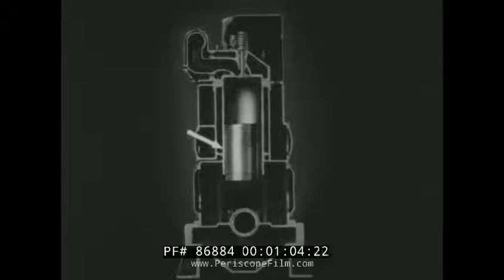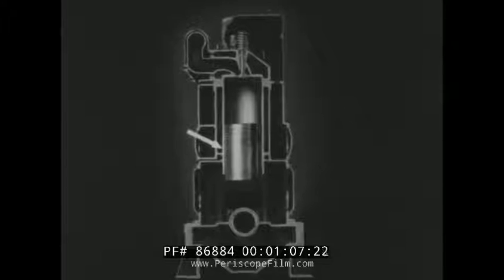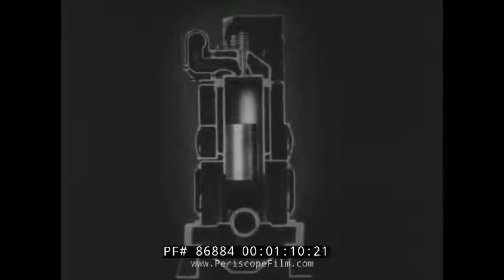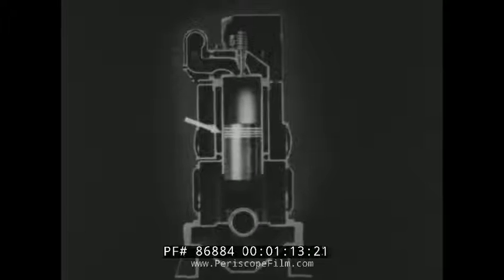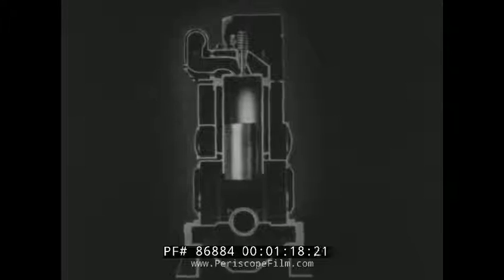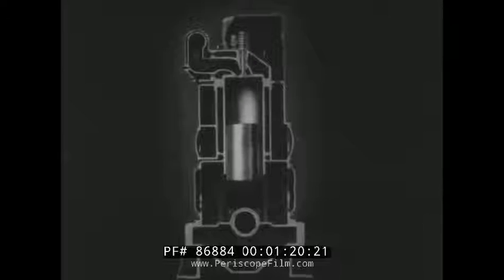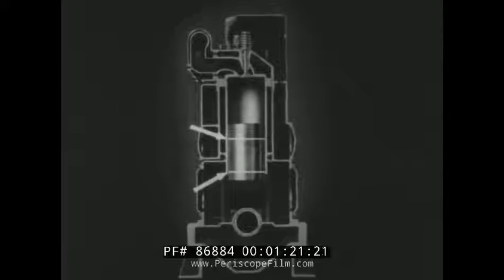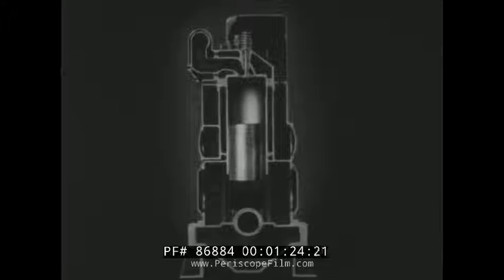The pistons convert the pressure of the combustion gases into reciprocating motion. A series of piston rings called compression rings prevents leakage of the combustion gases around the piston and conducts heat to the water-cooled cylinder walls. Oil control rings distribute lubricating oil over the cylinder walls.